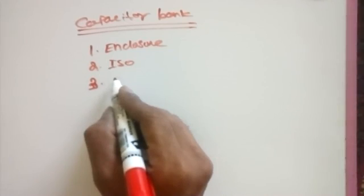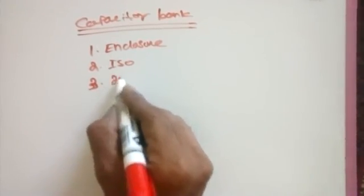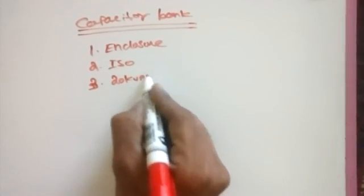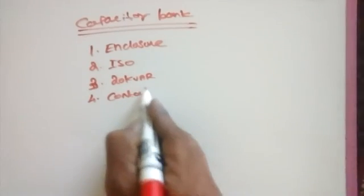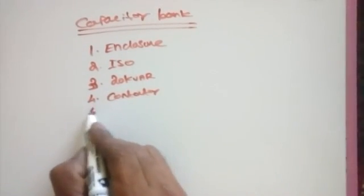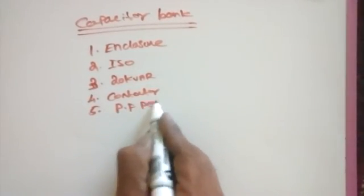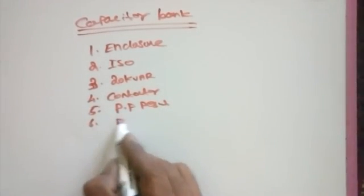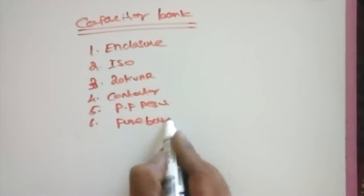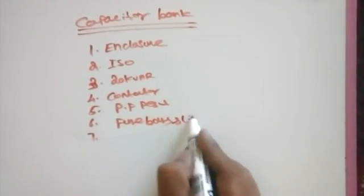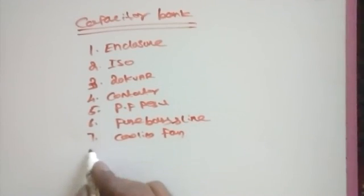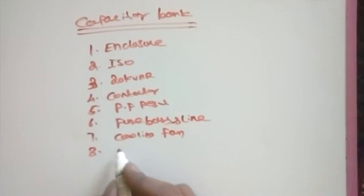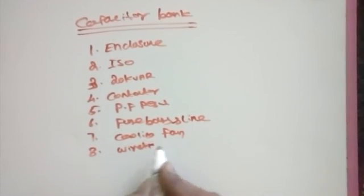How much kVR you needed? I choose 20 kVR. Then conductors, then power factor regulator, then fuse basis and unlink, cooling fan, and then wires and mounting screws.